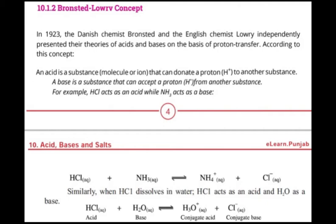Consider the example: HCl + NH3. What does HCl do here? HCl acts as an acid and NH3 acts as a base. HCl acts as an acid because it donates its proton, and that proton is accepted by NH3, so NH3 acts as a base. When HCl donates its proton, HCl loses its hydrogen.